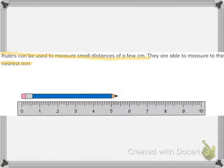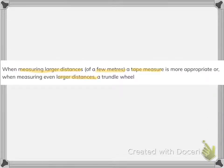Rulers can be used to measure small distances of a few centimeters and they can also be used to measure to the nearest millimeter. To measure small or large distances of a few meters, you could use a tape measure. However, if you want to measure even larger distances, a trundle wheel is more recommended.